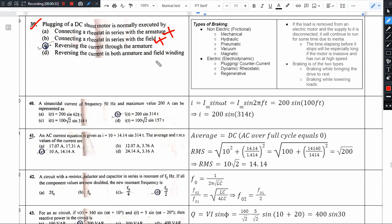Next, reversing the current to both armature and field winding. And option C, reversing the current through the armature only. See, option D reverses both the armature and field, so the current direction is reversed.